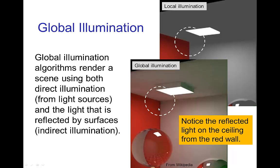You can see that in this comparison of these two rendered images, the one with local illumination has no reflected light from the red wall on the ceiling.